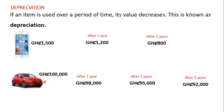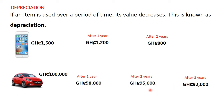From these two examples we can see that as an item is used over a period of time its value decreases. For the phone, the value decreased from 1,500 GHS to 1,200 GHS after the first year, and from 1,200 GHS to 800 GHS after the second year. For the car, the value decreased from 100,000 GHS to 98,000 GHS after the first year, and from 98,000 GHS to 95,000 GHS after the second year.